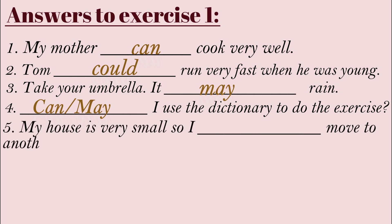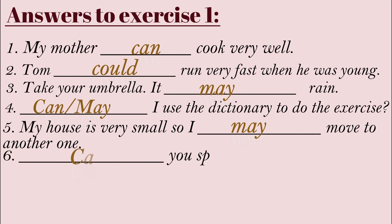Number five: 'My house is very small, so I may move to another one.' Here 'may' is more probable because of the small house — however, some people might say 'I might move to another one.' Number six: 'Can you speak Russian fluently?' — asking whether the person has the ability to speak Russian fluently.